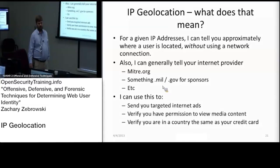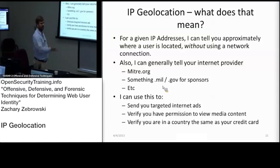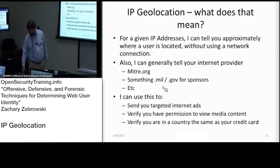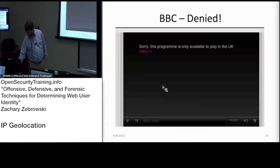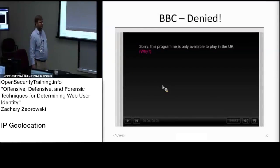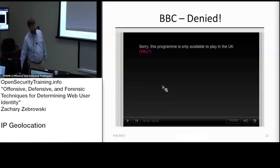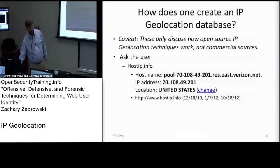When you go to Google, they generally say, hey, you Arlington, Virginia user, are you interested in these companies? Generally, the other reason why they do it is because when you go to the BBC, they want to make sure you're in England and not in the US or another country where they don't have a license to show you that program.